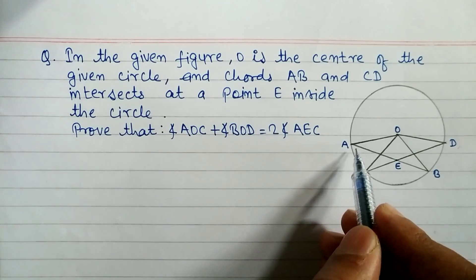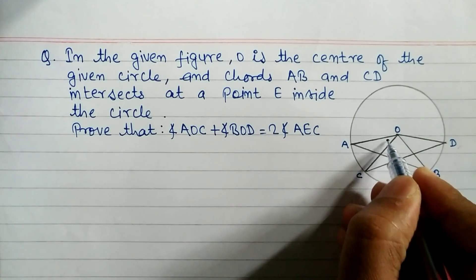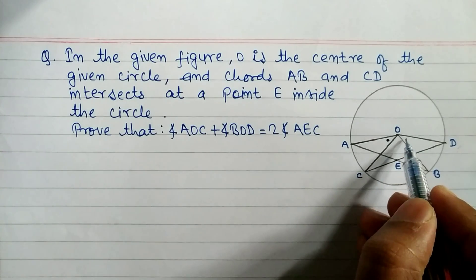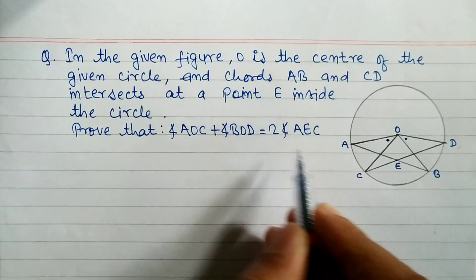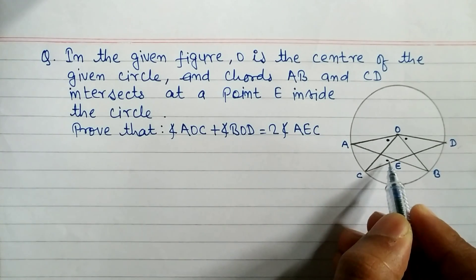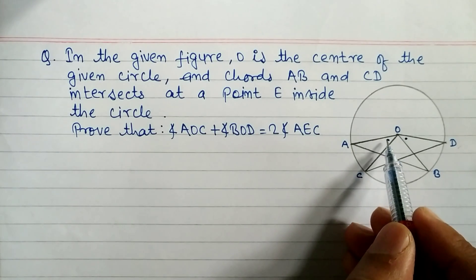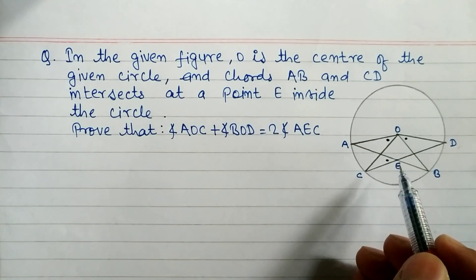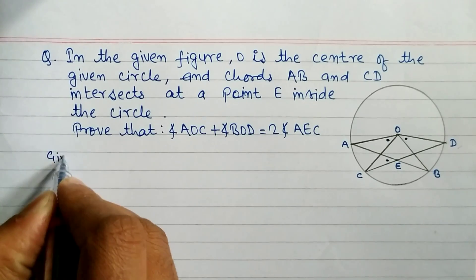What we have to prove is that angle AOC plus angle BOD is equal to two times angle AEC. We need to look at angle AOC, angle BOD, and when we add these two angles, we get two times angle AEC.